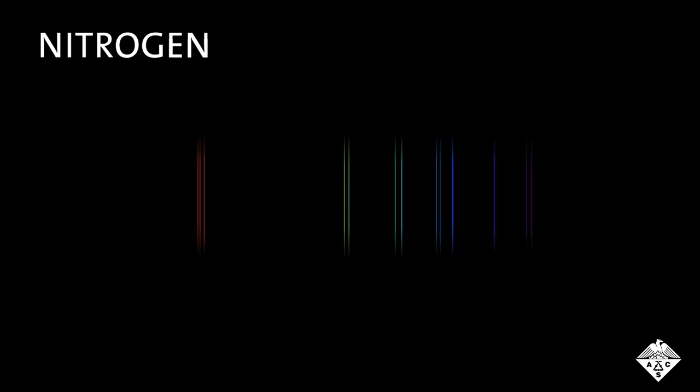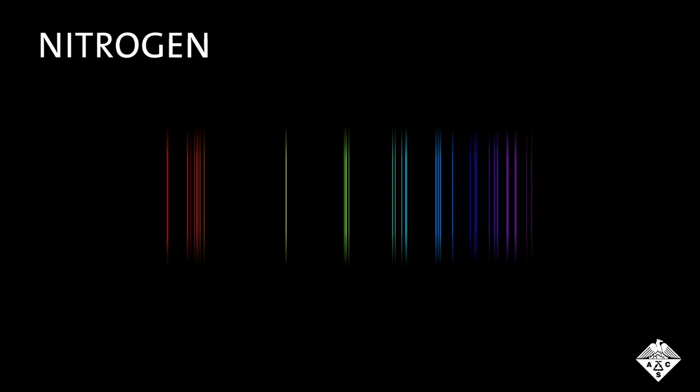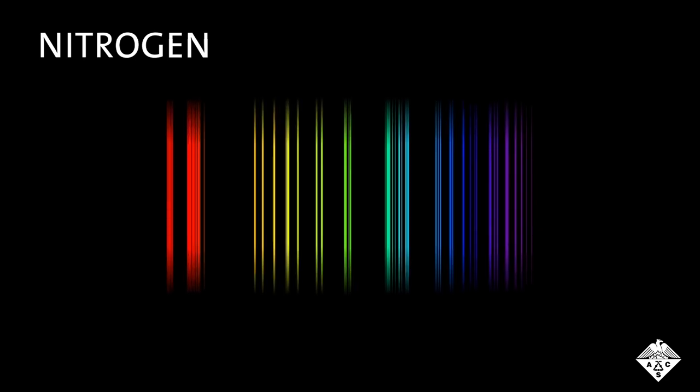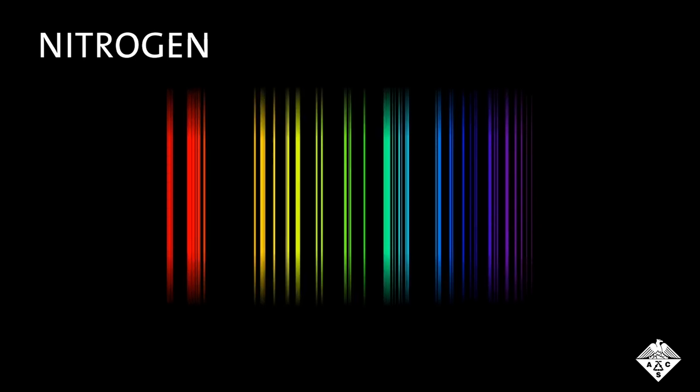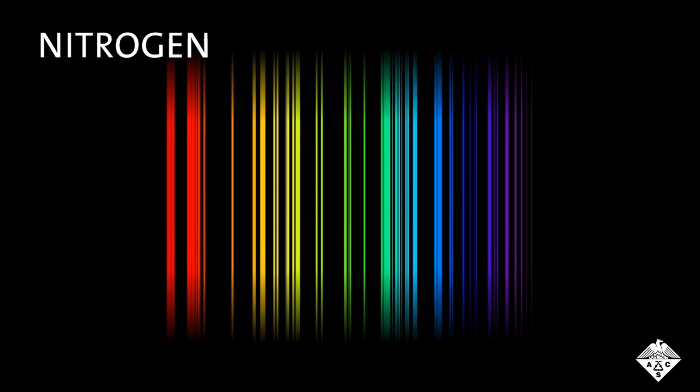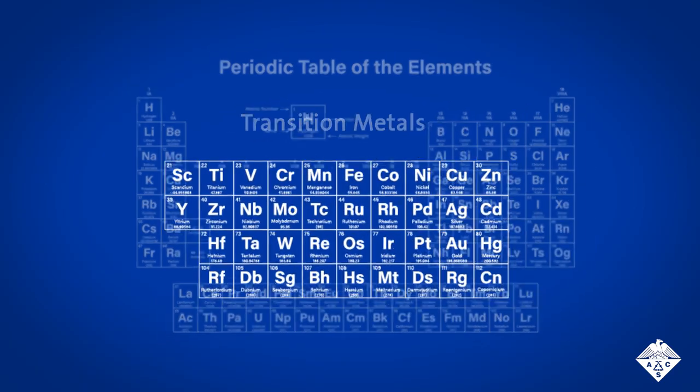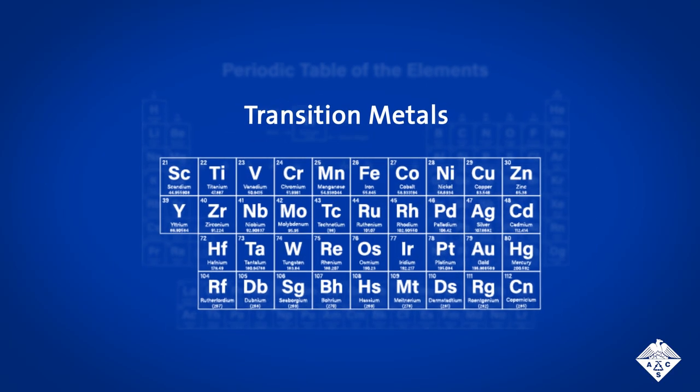Elements emit visible light when they are energized. This light is made up of multiple individual wavelengths with brightness levels that are unique for each element. On paper, the individual wavelengths are visually hard to tell apart, especially for the transition metals. But converting the light into sound frequencies could be another way for people to detect the differences.